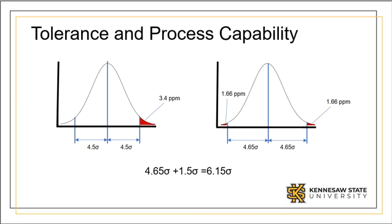In six sigma, our short-term goal is Z of 6.0. This is 3.4 parts per million defects. When accounting for the 1.5 sigma shift, this is a long-term sigma of 4.5. However, we must use a factor of 6.15 times the upper and lower spec limit.